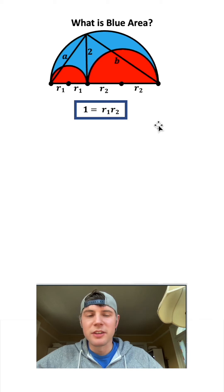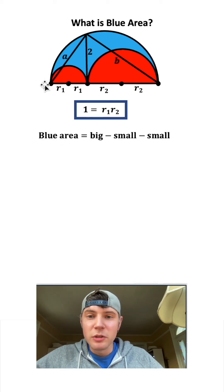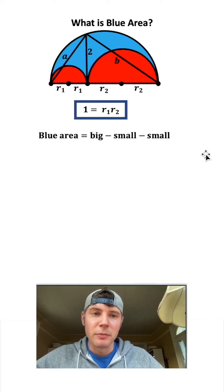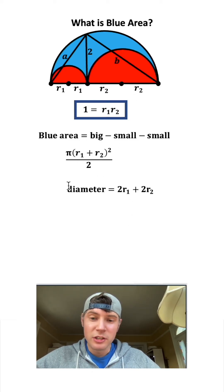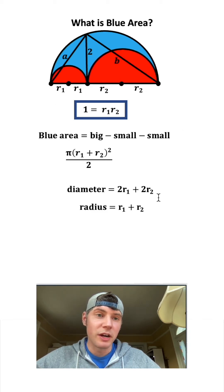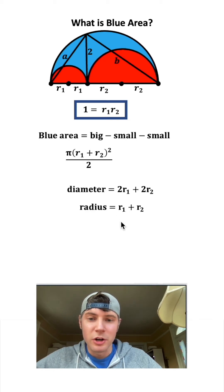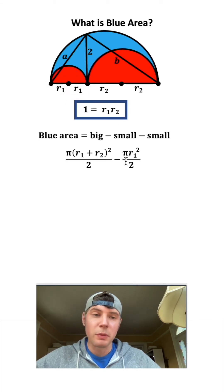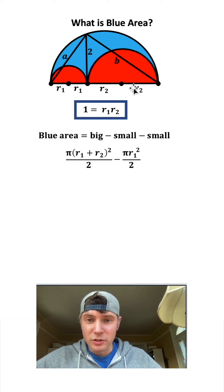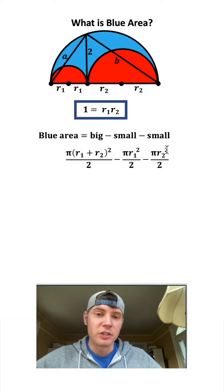Now let's find the blue area: big semicircle minus the two smaller semicircles. The area of the big semicircle is π(r₁+r₂)²/2, since the radius is r₁+r₂ — you can see this because the diameter is 2r₁+2r₂, so dividing by 2 gives r₁+r₂. For the small red semicircle with radius r₁, we subtract πr₁²/2. For the other red semicircle with radius r₂, we subtract πr₂²/2.